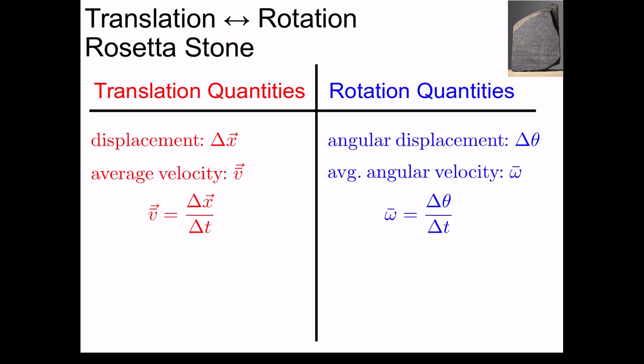Returning to our Rosetta Stone, on the translation side, we also have the instantaneous velocity, v. In fact, you've seen that this is the thing we're usually the most interested in. And this was defined as delta x over delta t for very, very, very tiny delta t's, looking at the slope at a point.